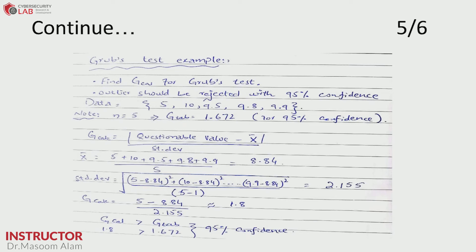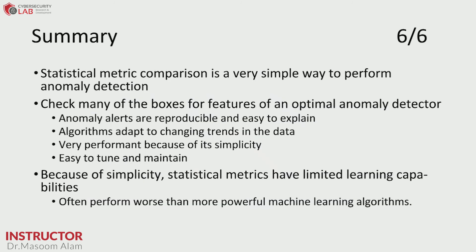This is a simple way to perform the Grubbs test to see whether a point is an outlier or not. Statistical metric comparison is a very simple way to perform anomaly detection — we are not doing any machine learning, just calculations. It checks many boxes for features of an optimal anomaly detector and is simple to tune and maintain. However, it is very limited because statistical metrics have limited learning capabilities and often perform worse than more powerful machine learning algorithms, especially when time series data is erratic or has no seasons or cycles. Thank you very much and I'll see you in the next topic.